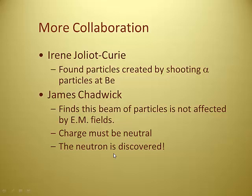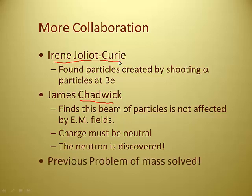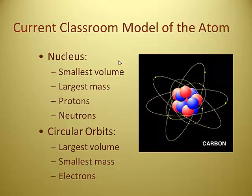Because Joliet Curie published her data but didn't know what it was, she doesn't get credit for discovering the neutron. On a test, if we ask who discovered the neutron — it's Chadwick. I think Irene Joliet Curie deserves credit because she's the one who found it first. What that means is our previous problem of mass is solved, because this neutron actually weighs something. The proton and neutron located in the nucleus make up the bulk of the mass of an atom. The electrons are outside the nucleus, moving around in orbits — the solar system model. So basically you've got protons, neutrons, and electrons in concentric orbital circles.